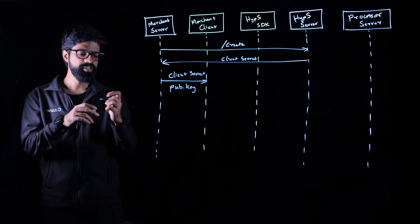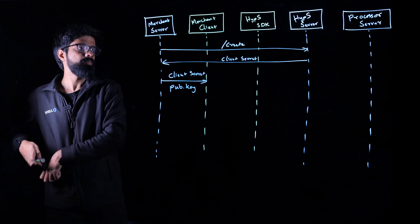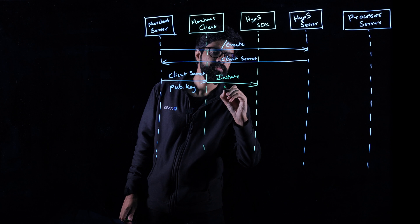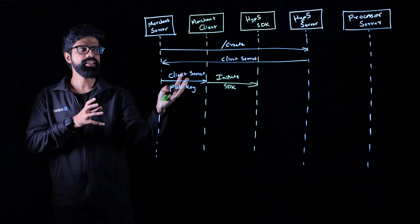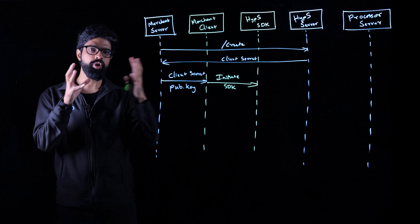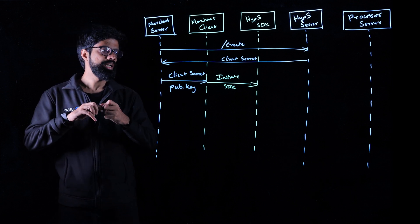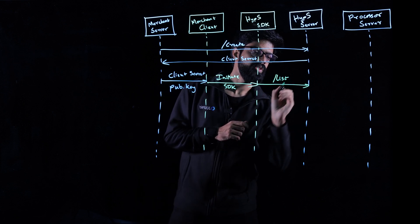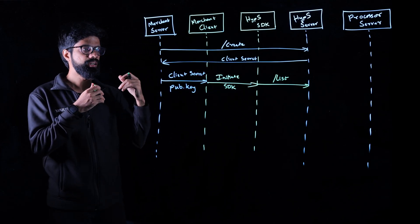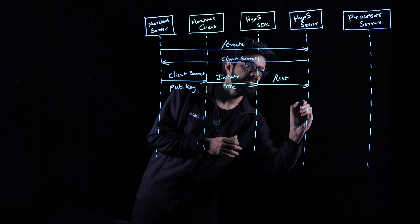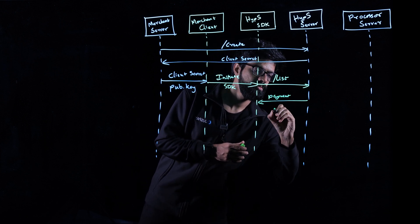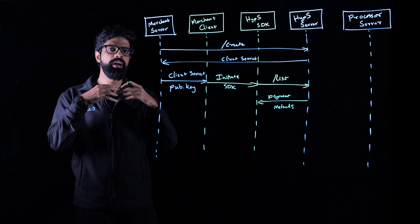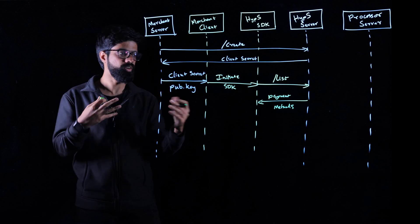Once the merchant client has received the publishable key and the client secret, your application will now initiate the Hyperswitch SDK. In order to initiate the SDK, Hyperswitch needs to know the exact payment methods you have configured for your application. So there is now a payment method list request that is sent to the Hyperswitch server. This API gives back the payment methods that are applicable for this transaction. Once this is done, the SDK is initiated and you start accepting payment method details from your customer.